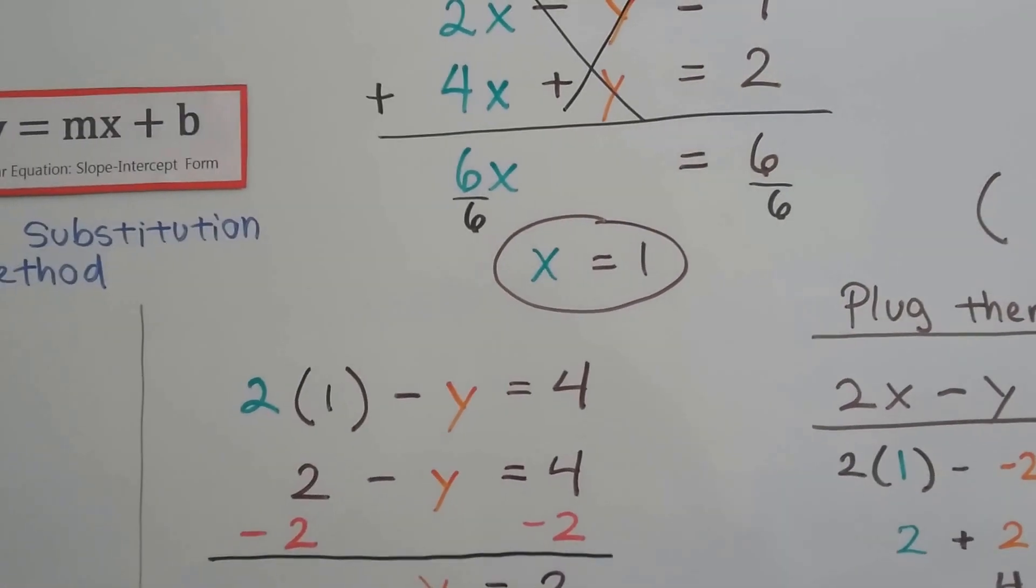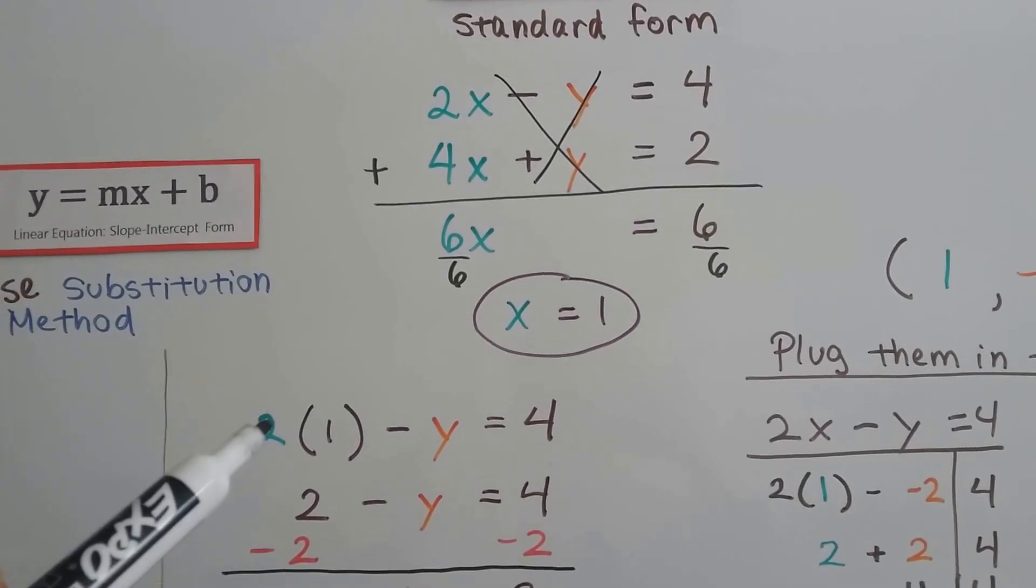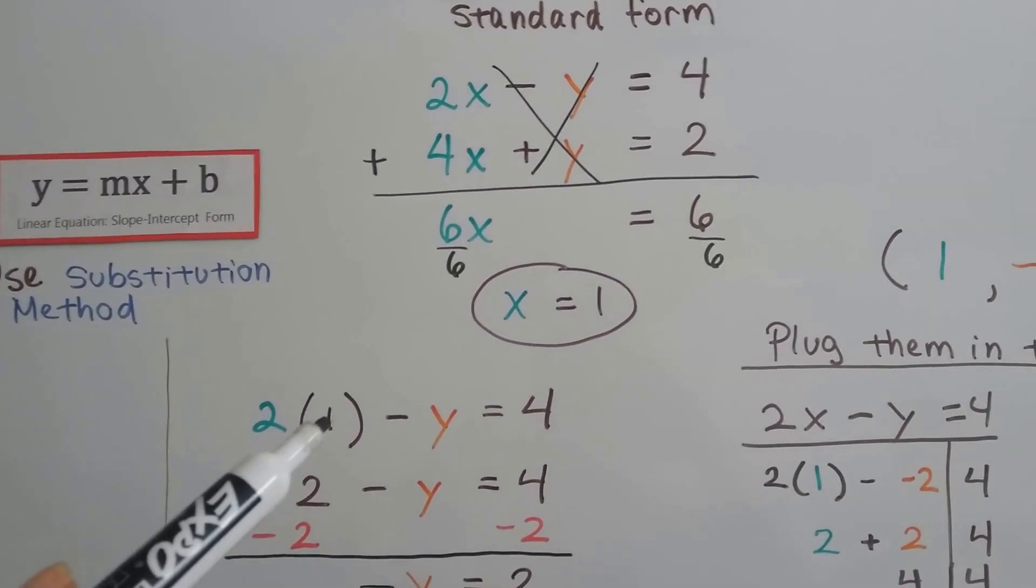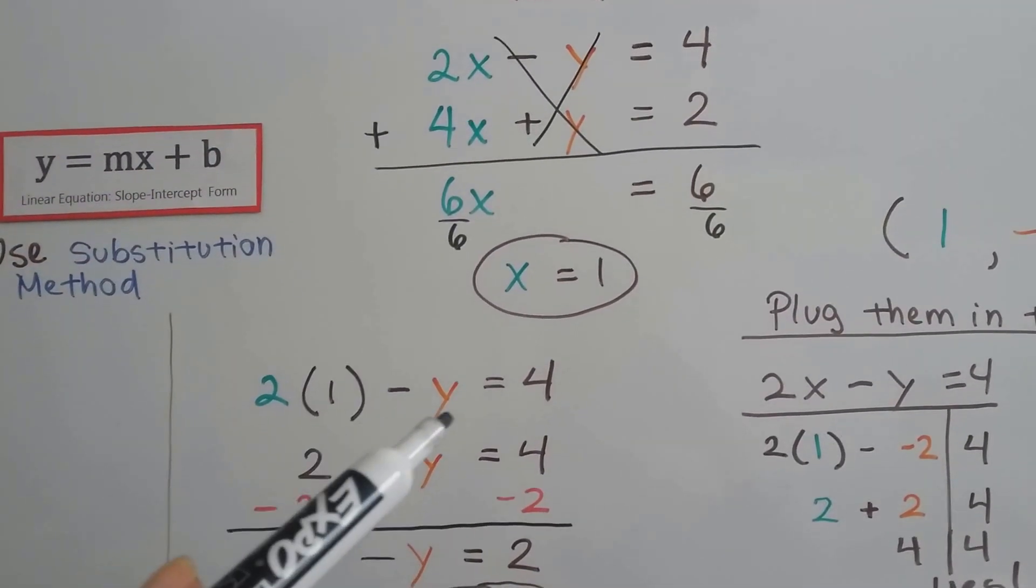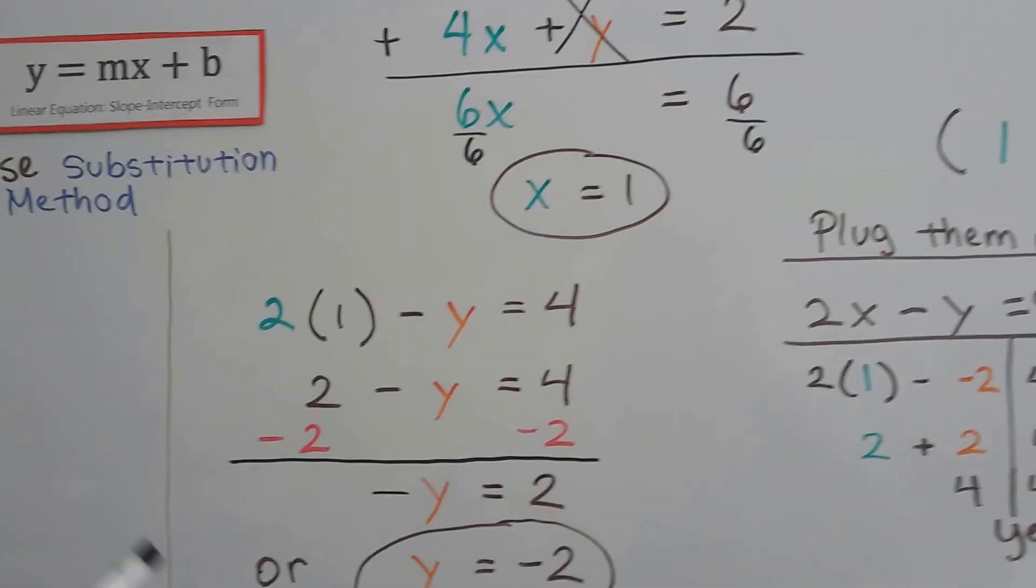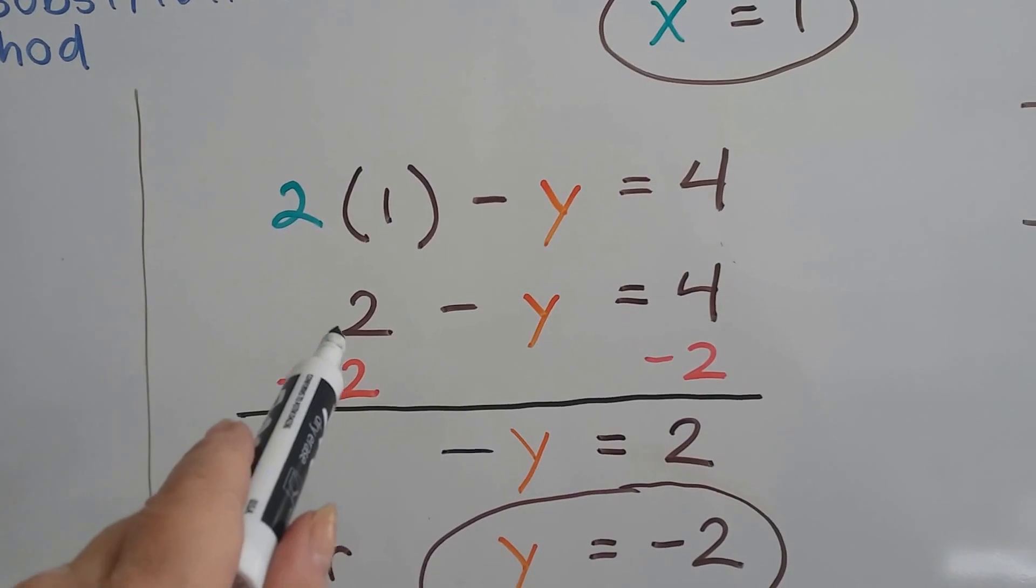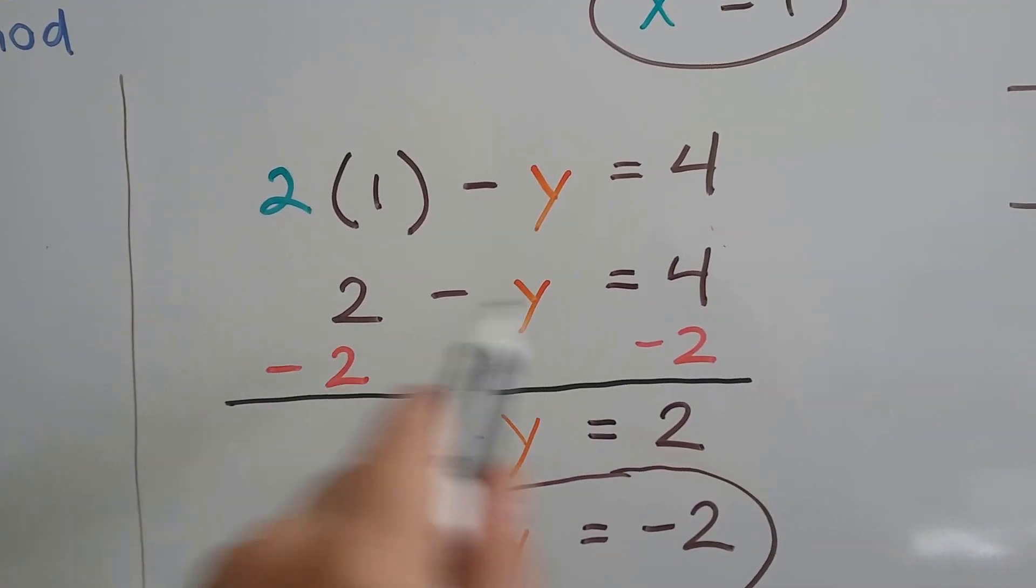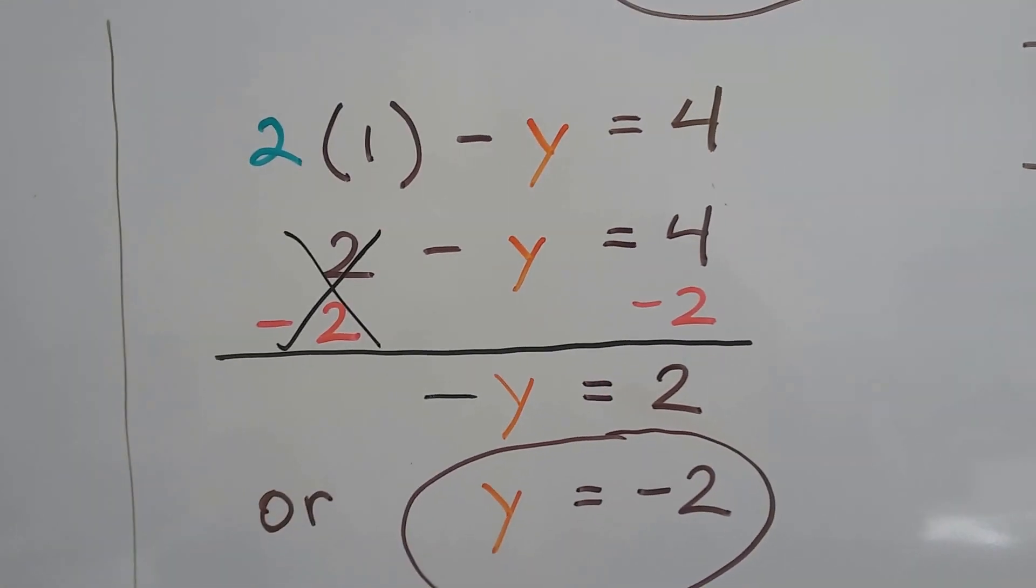We can plug it in to one of the equations. Either one, it doesn't matter. I chose the first one. So we've got 2 times 1 because that's the 2 times x, minus y = 4. Well, 2 times 1 is 2. So now we have 2 - y = 4. Now what we have to do, because this is a +2, is subtract 2 from each side of the equation and that eliminates this guy as a zero pair.